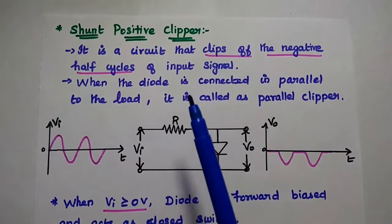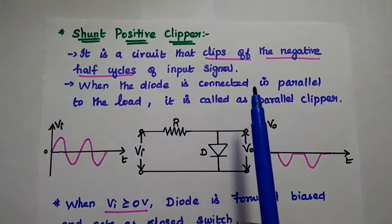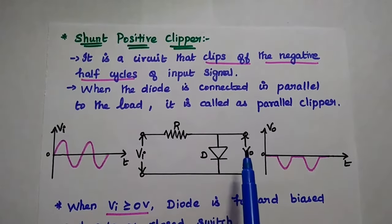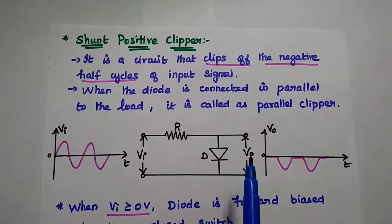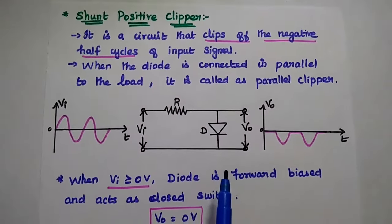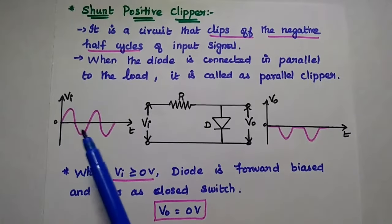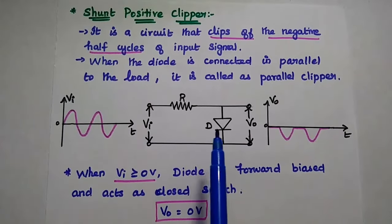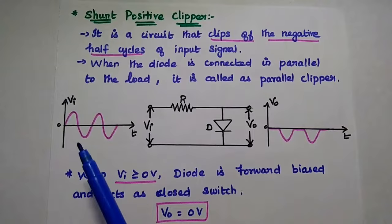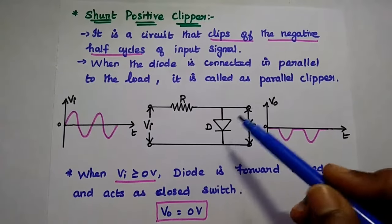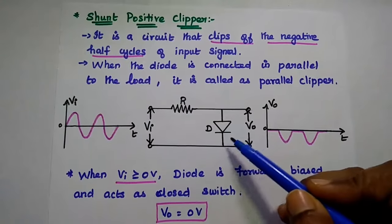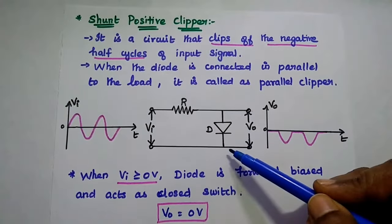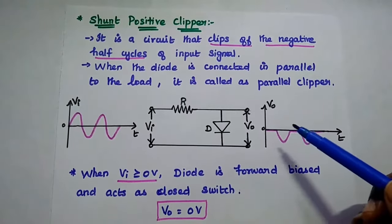Next is the shunt positive clipper. It is a circuit that clips off the positive half cycles of the input signal. Here, the diode is connected in parallel to the load — that is called the shunt positive clipper. During the positive half cycle, whenever the input voltage is greater than or equal to 0 volts, the diode is forward biased — positive and positive means forward biased — and the diode acts as a short circuit. If it is short circuit, there is no output; all the input is sent to ground.